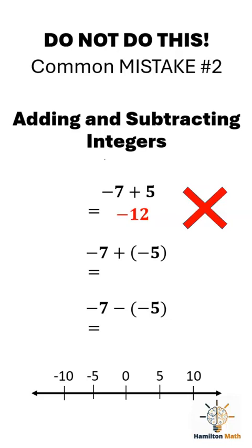Here's the right way to think about it. See the number line at the bottom of your screen. If you're starting at negative 7 and adding positive 5, this means you're moving to the right on the number line. So negative 7 plus 5 is negative 2.